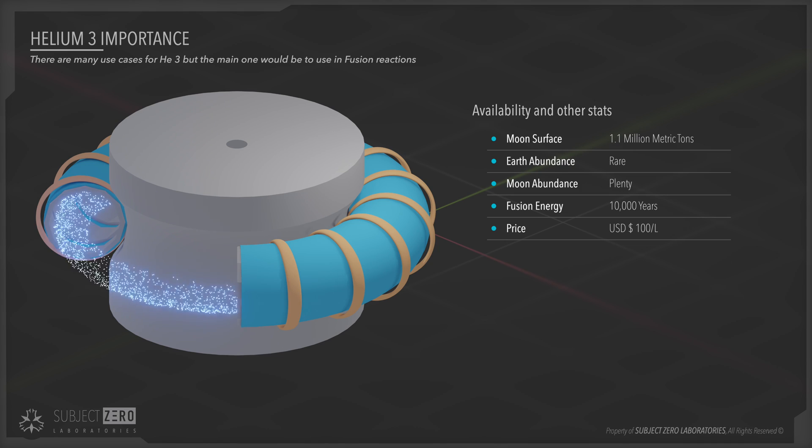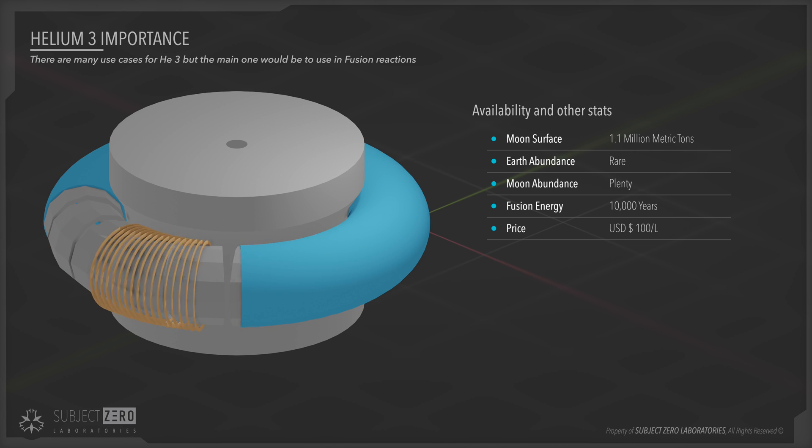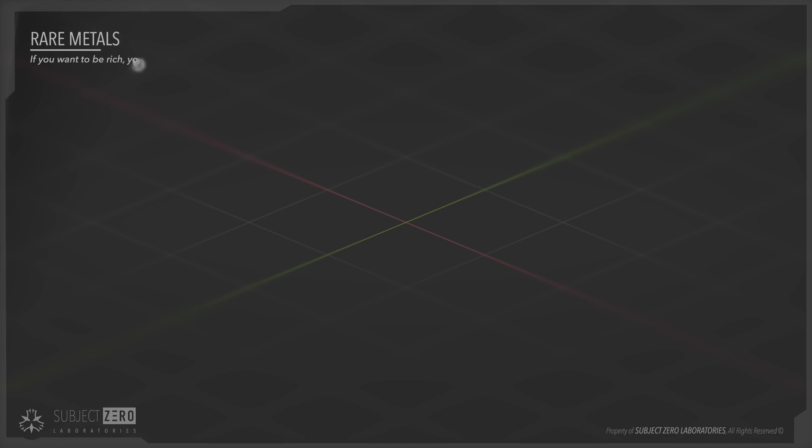Some early estimates said that there is enough HE-3 on the moon to provide fusion energy for the next 10,000 years with 1.1 million metric tons of it in its surface. But then again, fusion reactors are now expected to be around only by 2050, being very optimistic about this tech at all.